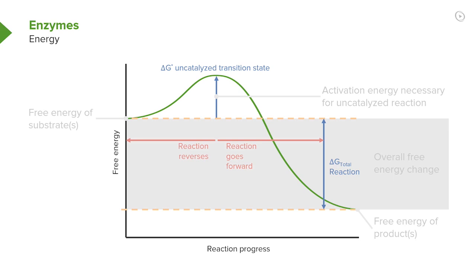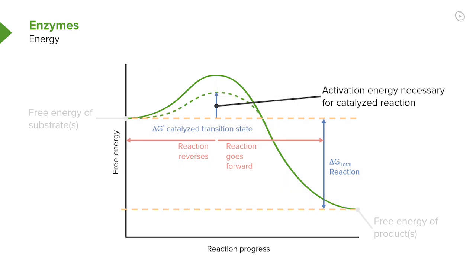A can start and then go back. Or B, if it got enough energy, could climb that curve and then go back to A. Otherwise, A is going to go forward to B and the reaction is going to be occurring. Now, enzymes cheat.